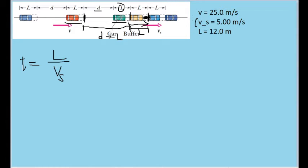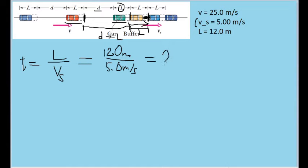Both of these values were given: L is 12 meters and V_s is 5 meters per second. Plugging in those values, we get a time of 2.4 seconds. So that's how long this motion takes, and keep in mind we want to apply this to find the variable D.